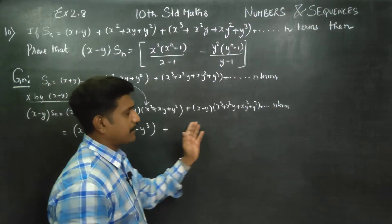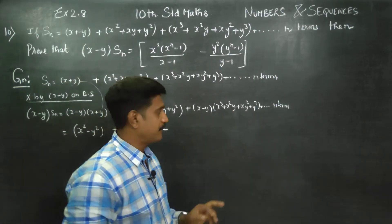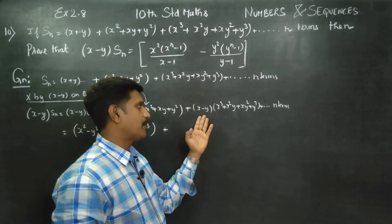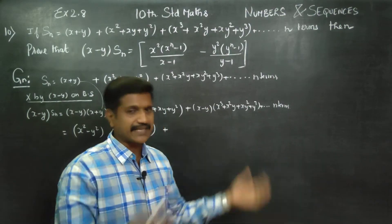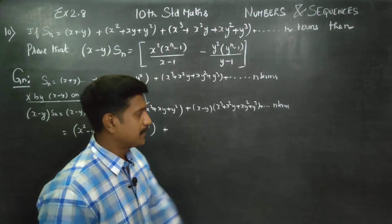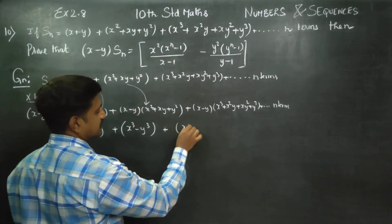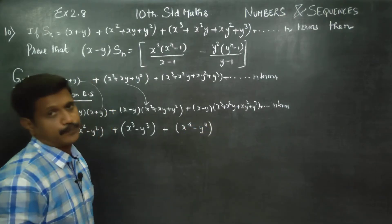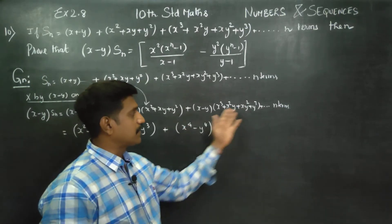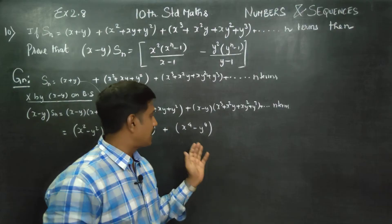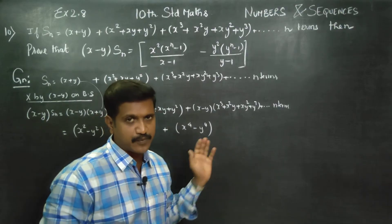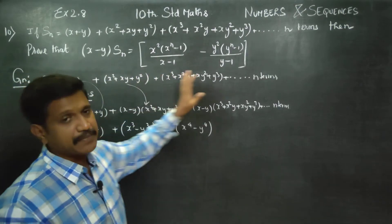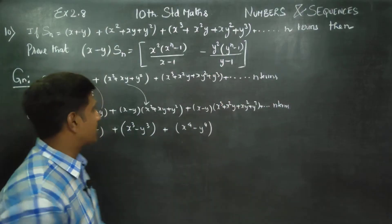Then we multiply: x to the power 4 minus y to the power 4 is the next one. You can multiply and get x⁴ minus y⁴. The sum has this symmetry.